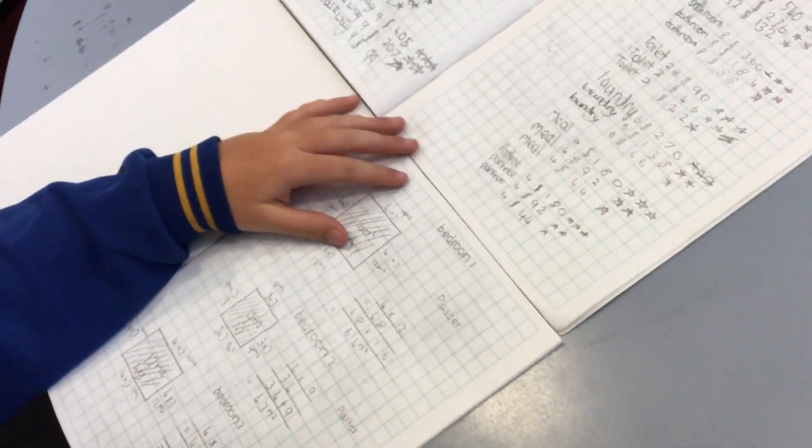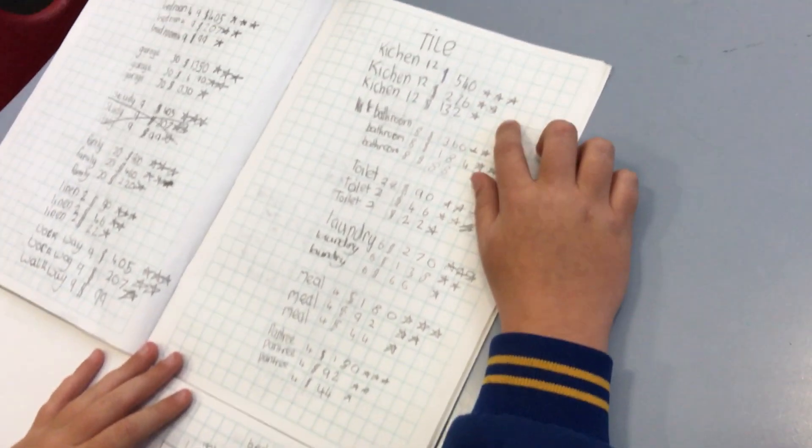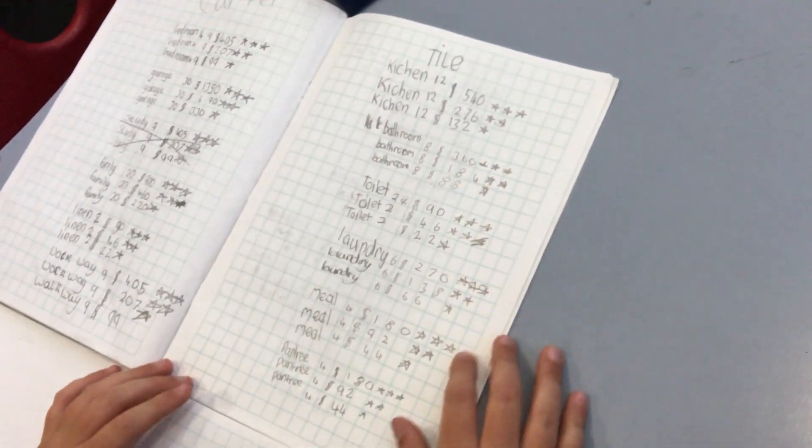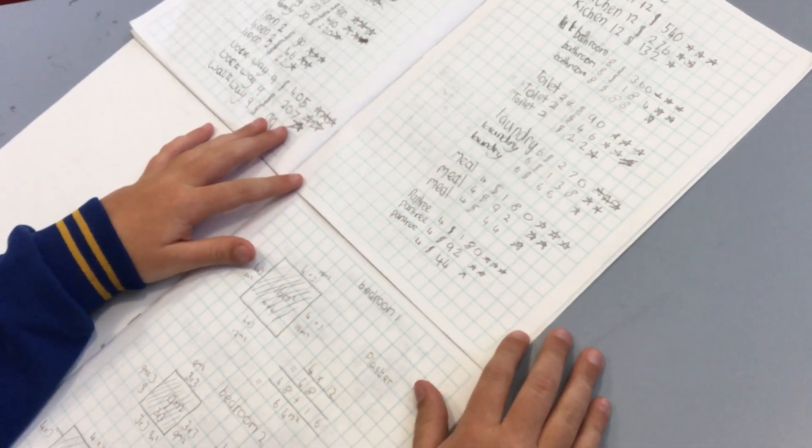And what was the 40, the 23, and 11? What was that? It's like three star, two stars, and one star. Oh, the quality. So you worked out all that, and then what did you do?